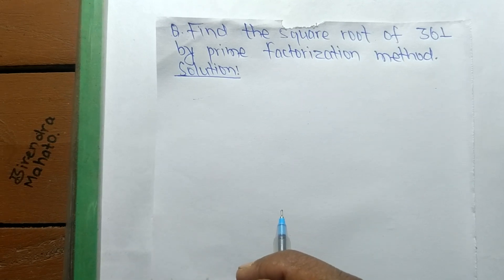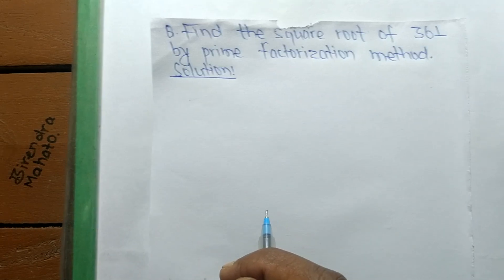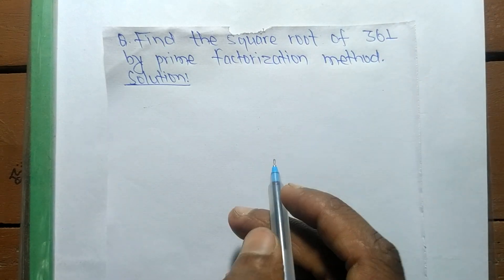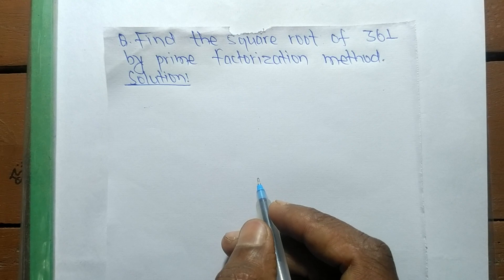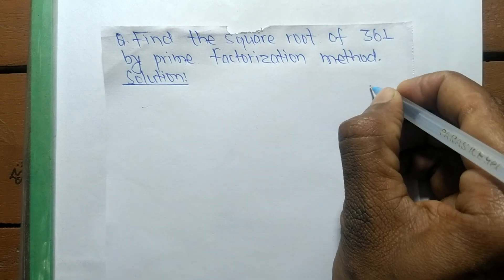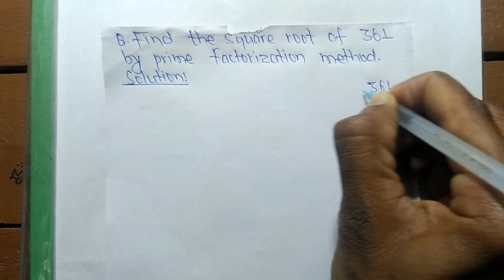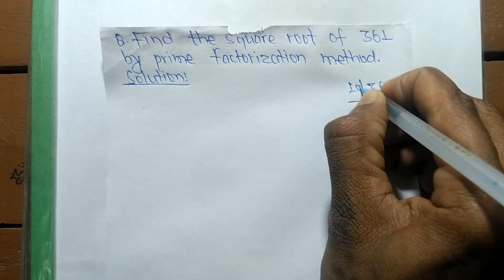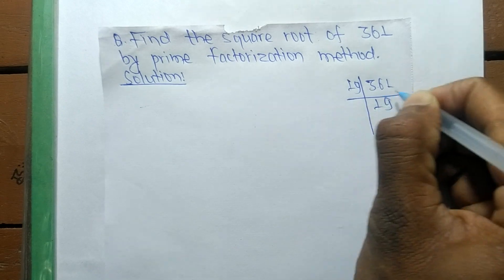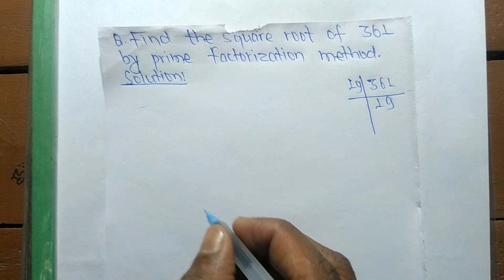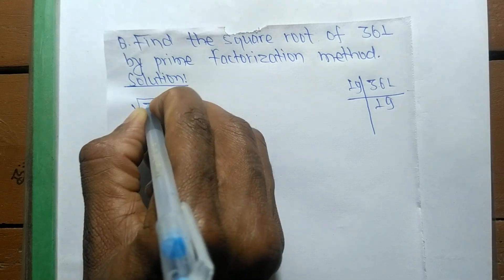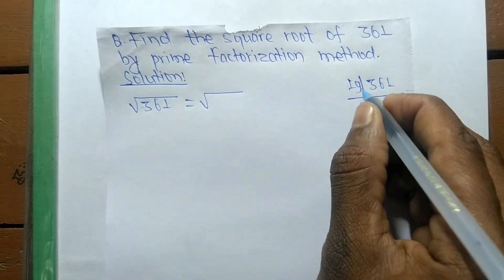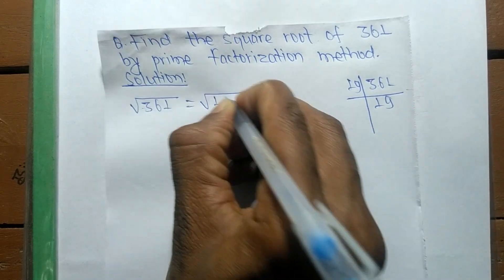Today we shall learn to find the square root of 361 by the prime factorization method. First, we find out the prime factors of 361, which equals 19 times 19. So the square root of 361 can be written in terms of its prime factors as 19 times 19.